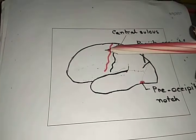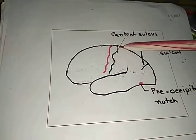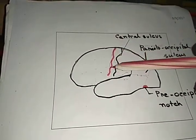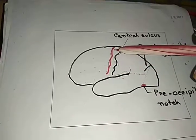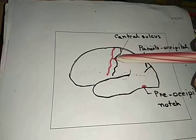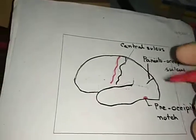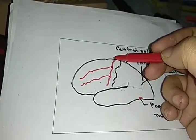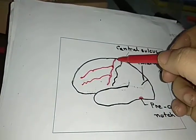The sulci of the frontal lobe: just in front of the central sulcus, an important sulcus is present — this is the pre-central sulcus. Two more important sulci are present: this is the superior frontal sulcus, and this is the inferior frontal sulcus. So, three sulci in total: pre-central sulcus, superior frontal sulcus, and inferior frontal sulcus.